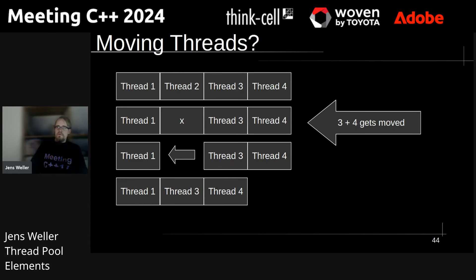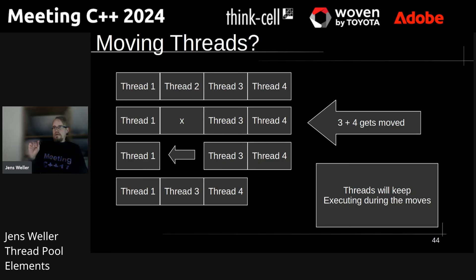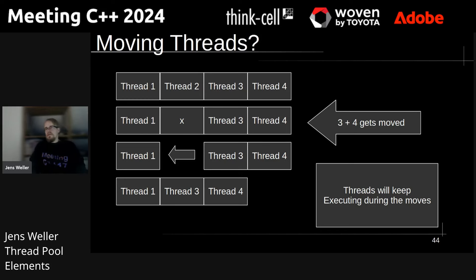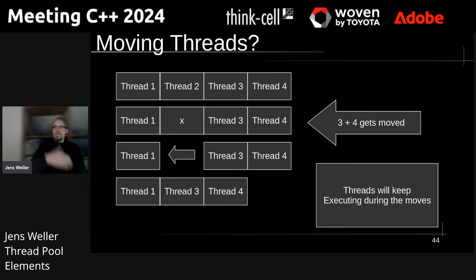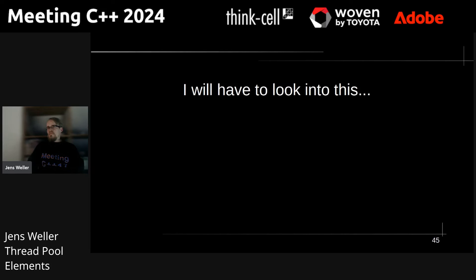Thread four will be in the memory area where thread three was, causing very interesting issues. We should keep in mind that threads will potentially keep executing during this reallocation — maybe they're sleeping, maybe they're waiting on a lock and we can update things, but they might be running and accessing the variables in the execution function. That's something I want to look into. To get this into a more pronounced state, I need to move out of Compiler Explorer to create a CMake project with Conan to bring in other dependencies.